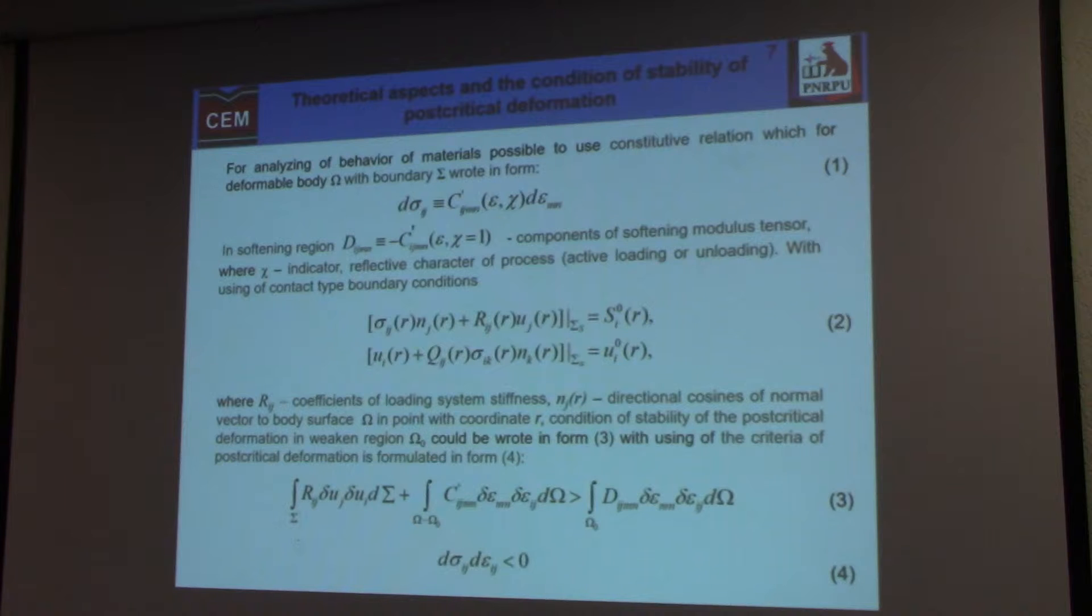For analyzing post-critical behavior of materials, it's possible to use a constitutive relation in this form. In a softening region, there is a component of softening modulus tensor, and with using of contact type boundary condition, which includes coefficients of stiffness or coefficients of compliance of loading system. And then, it's possible to formulate the criteria of stable post-critical deformation in this form.